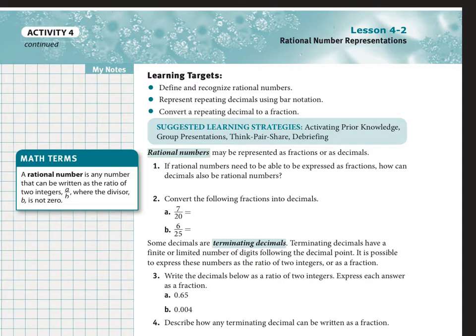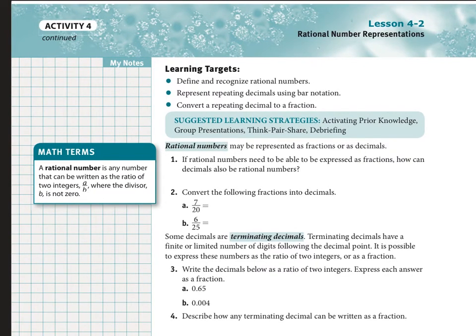The biggest thing here is what a rational number even means. You can see the definition there - a rational number is any number that can be written as the ratio, and if you look at the word rational, it starts with ratio. So a ratio of two integers, a over b, where the divisor b is not zero. Basically, any number that can be written as a fraction is considered rational.